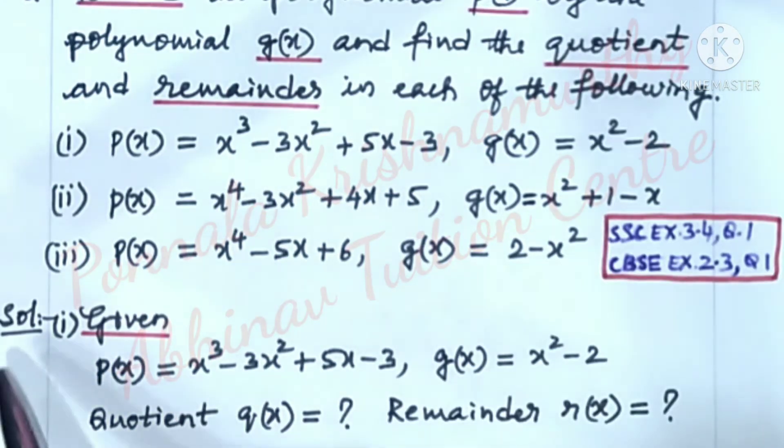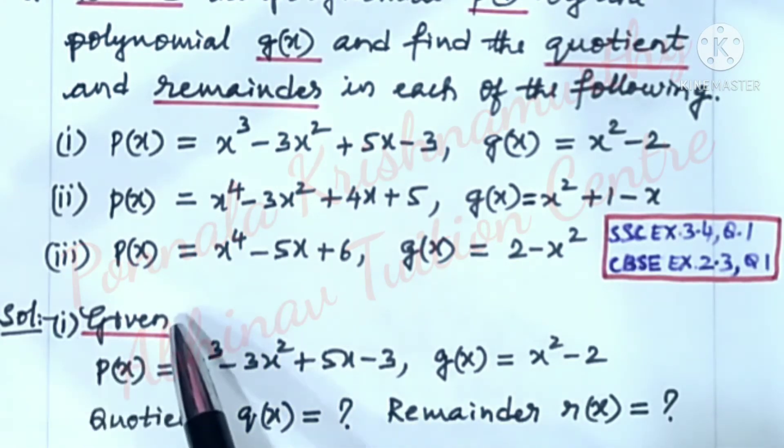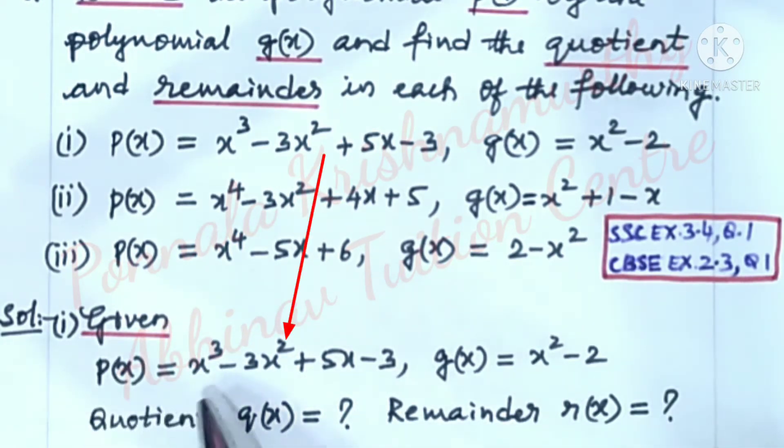Reference is here. Solution. First one. Given p(x) is equal to x³ - 3x² + 5x - 3. g(x) is equal to x² - 2. Quotient q(x) is equal to how much? Remainder r(x) is equal to how much?